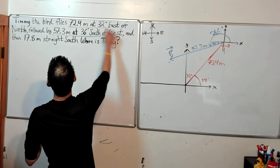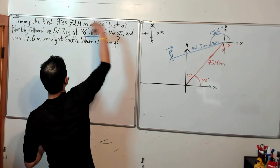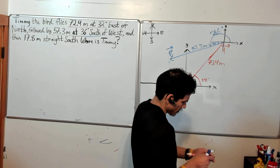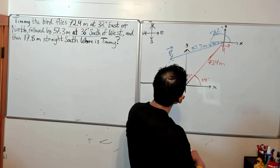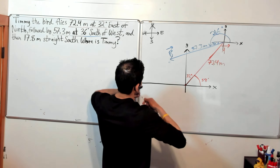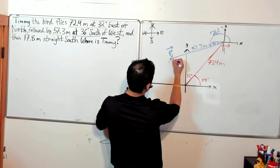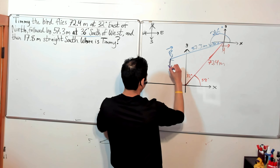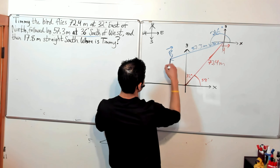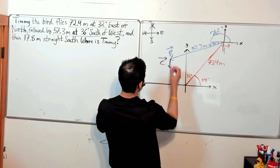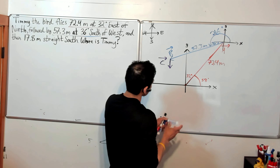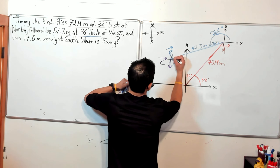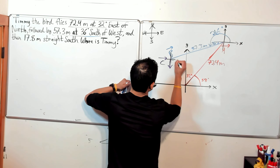And finally we go just 17.8 meters straight south — we'll call that vector C. So straight south, approaching this as if this is a vertical and horizontal XY axes.